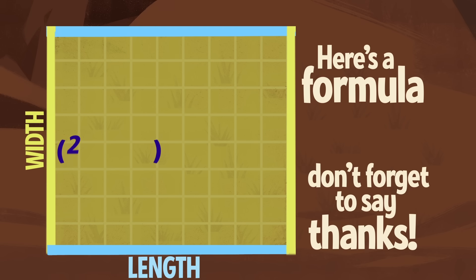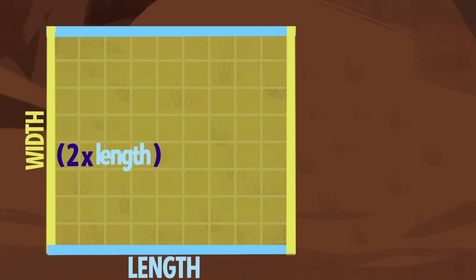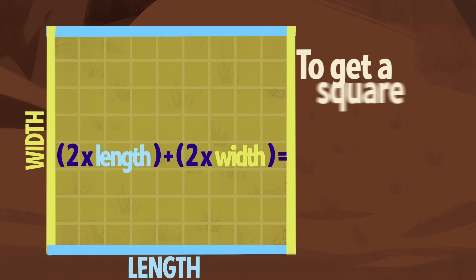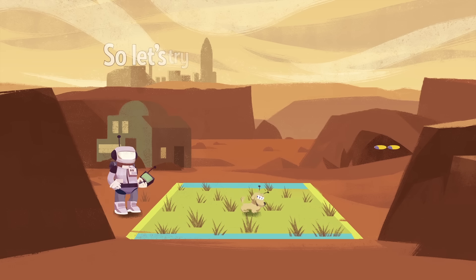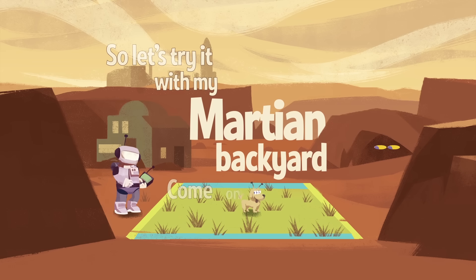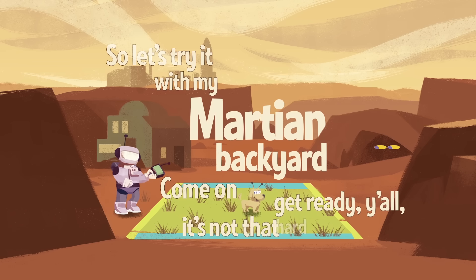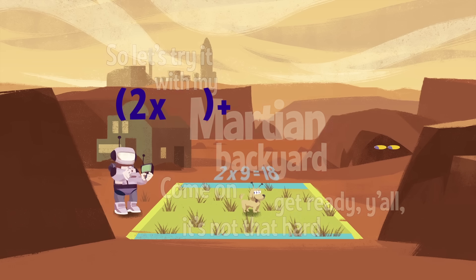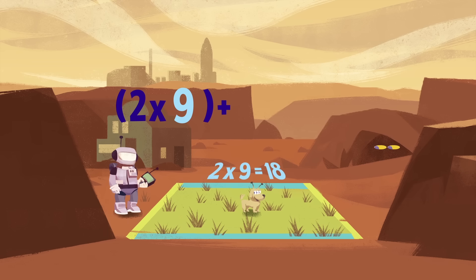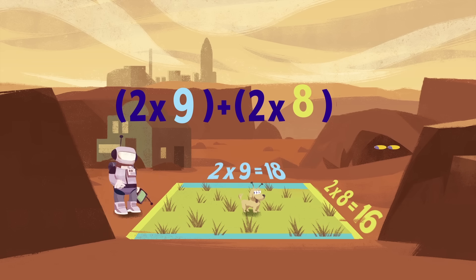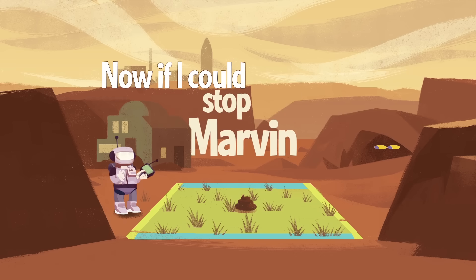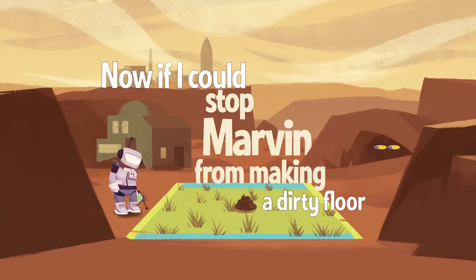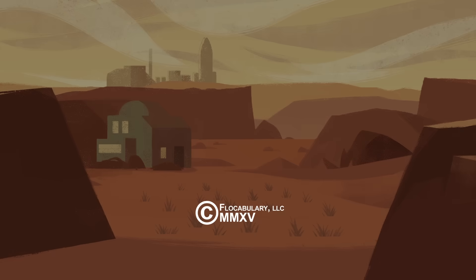To get the perimeter of a square or rectangle, you add 2 widths plus 2 lengths. Here's the formula: 2 times length plus 2 times width. So let's try it with my Martian backyard — 2 times the length of 9 is 18, and 2 times the width of 8 is 16, and 16 plus 18 is 34.